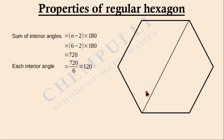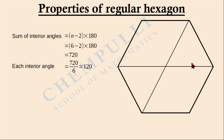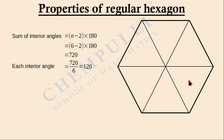That means this line divides the angle into two equal parts. Similarly, we can draw other lines of symmetry in the hexagon — each connecting opposite vertices or midpoints of opposite sides.